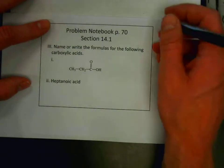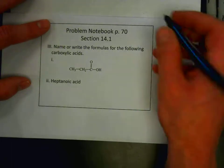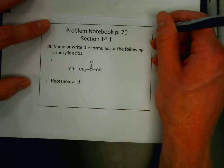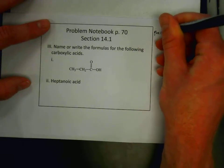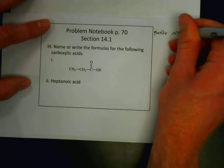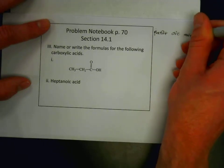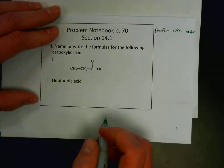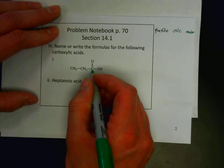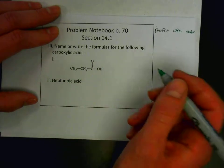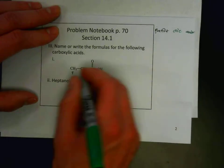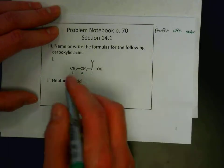We use the prefix to show the number of carbons, and then we follow that with the suffix OIC and the word acid. So it's the prefix, the number of carbons, followed by OIC and acid. So let's look at this first one here. We count the number of carbons. We have one, two, three carbons. Since we have three carbons, we're going to use prefixes that we've learned before.